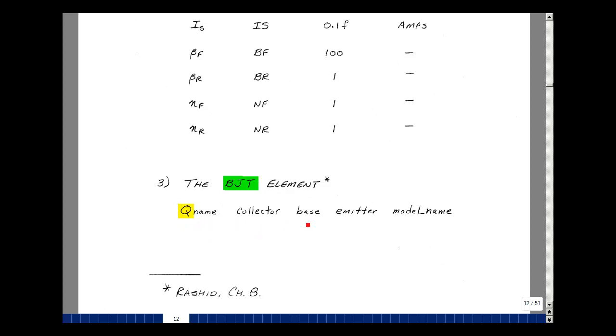We can give the collector, base, and emitter as the order, and then the model name. And on the model name, we'll give it the information about the parameters that we've selected or use the default values.